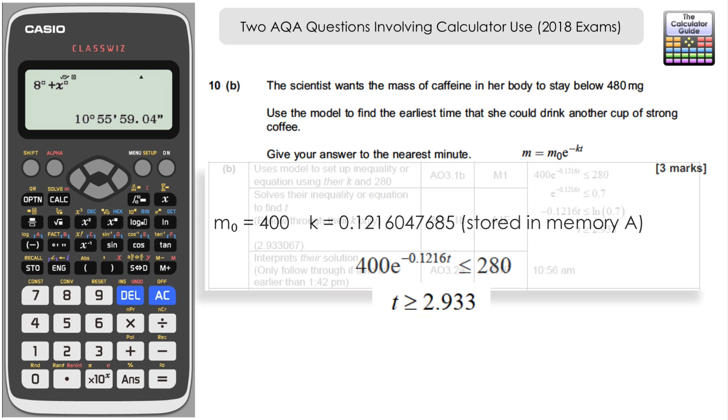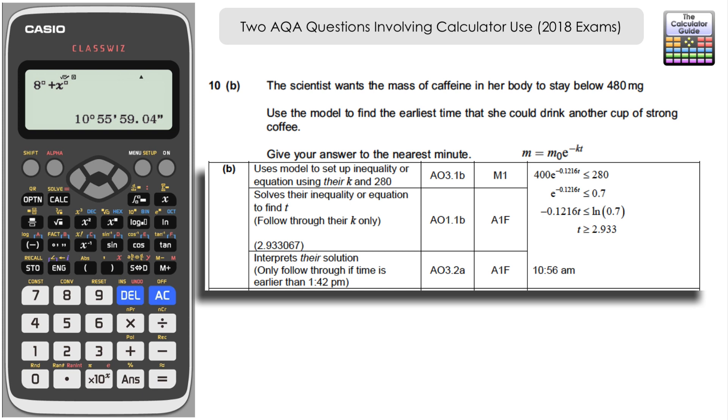Let's have a look at the mark scheme and check that. We need to use the model to set up an inequality or equation, so we could use equals. Remember you should be writing down what you're inputting into the calculator using their k. We know we've got k from part A, there is follow through if you made a mistake. We're using 280 not 480, remember, because we're adding another 200 when she drinks that new cup of coffee. The next mark is solves their inequality or equation to find t. It doesn't necessarily say how, as long as you've solved it to find this value of t, 2.933 and so on. They've given an example using logarithms and you're welcome to use that way, but we use the solver facility provided that we've solved to find t. And for the last bit, interprets their solution. That was when we added the amount of time t on to eight o'clock in the morning, giving us 10:56. That's the earliest time.